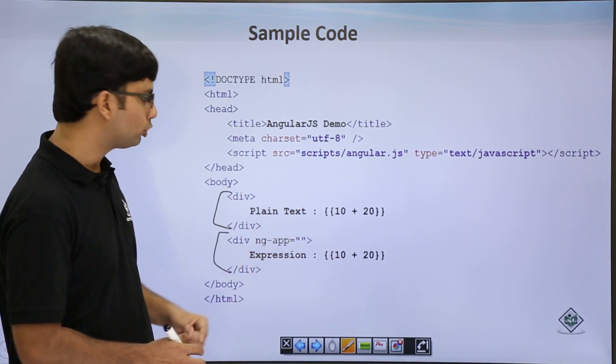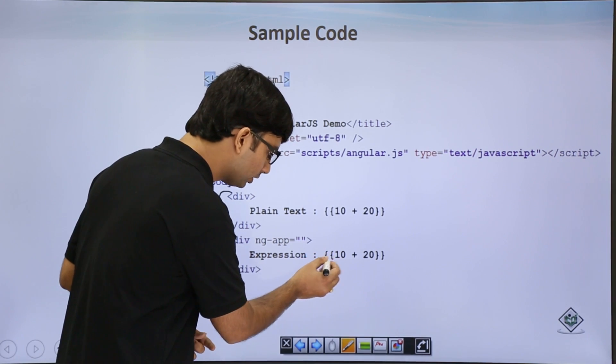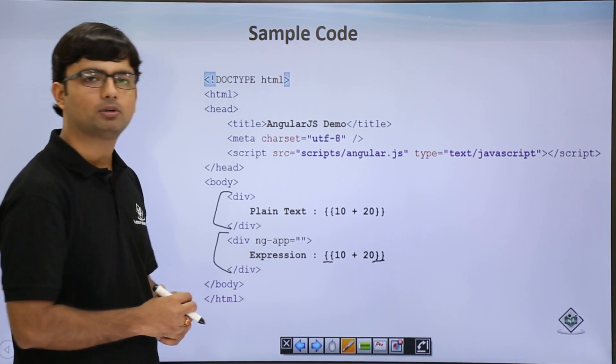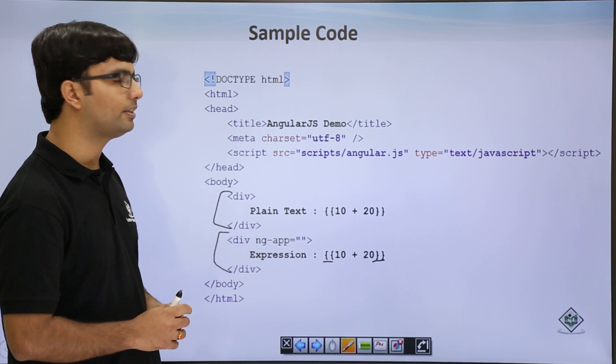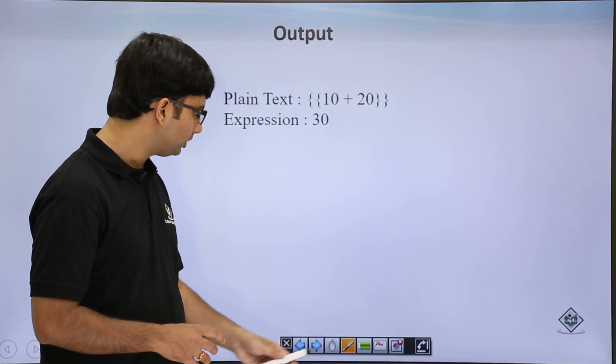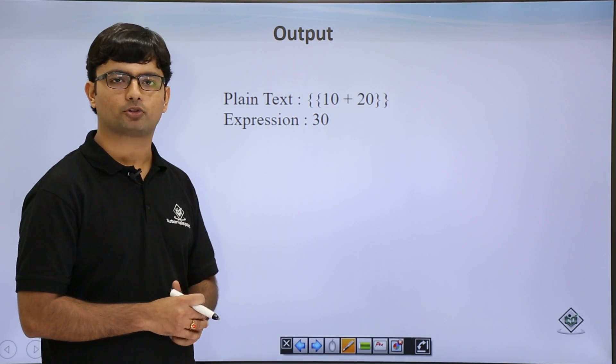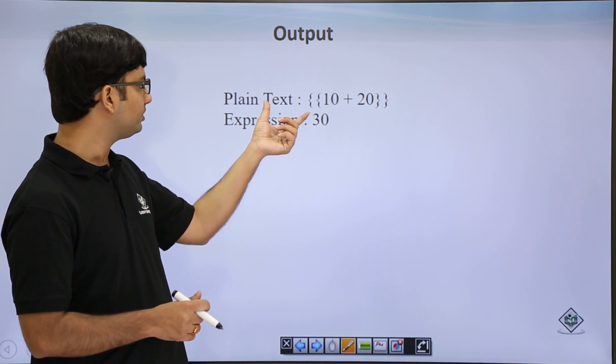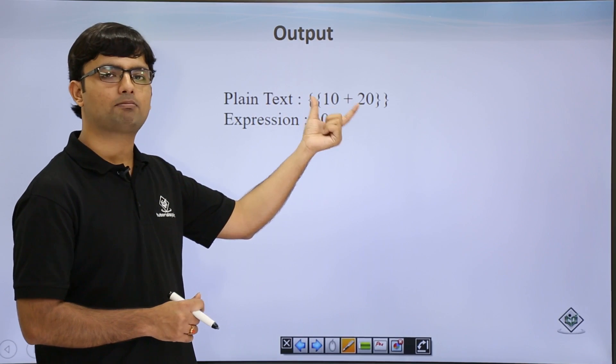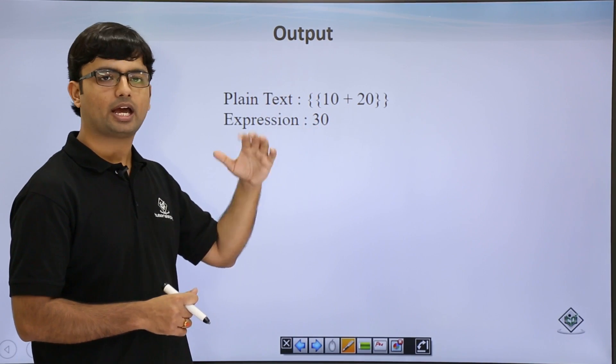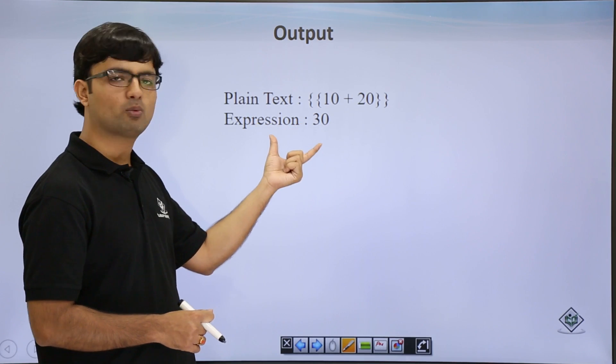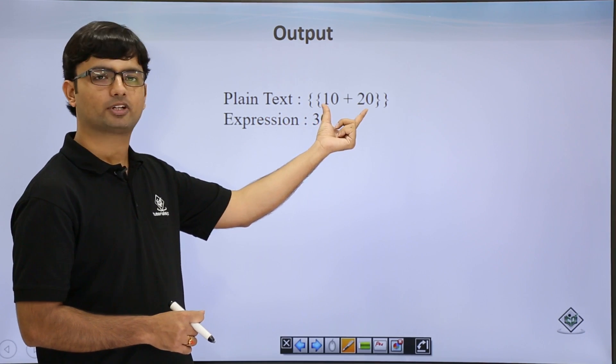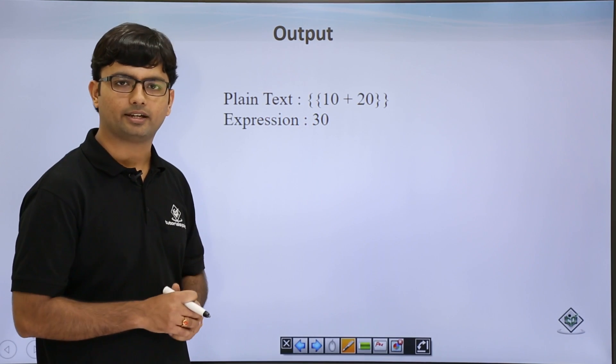When you run this page in the browser, you will find this as an output, where the first div treated that 10 plus 20 as plain text and printed it as is, while in the second one, it solves this expression and gives you the result as 30.